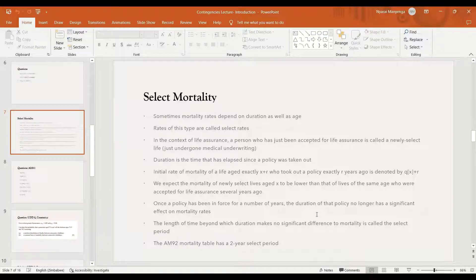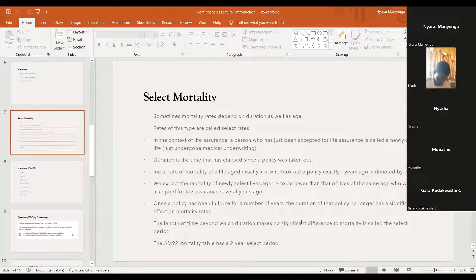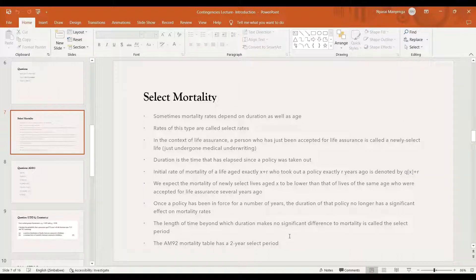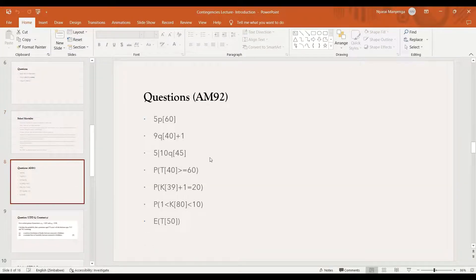Once a policy has been in force for a number of years, the duration will no longer have a significant impact on mortality rates. For the MI 92 mortality tables, it has a two-year select period. After that two-year period, it would be just ultimate mortality for everyone. I had a few questions for people to attempt using the MI 92 table, so I can give people just five minutes.